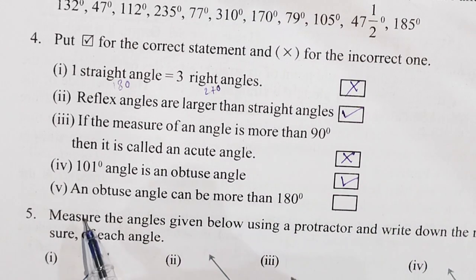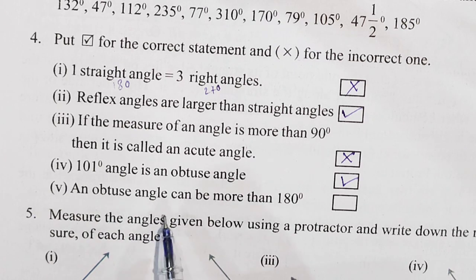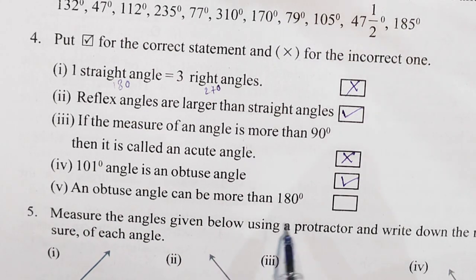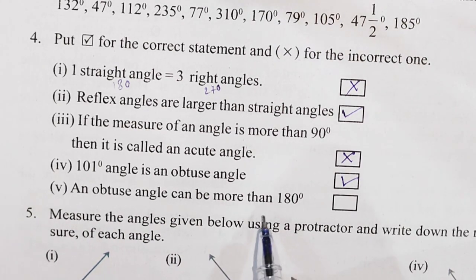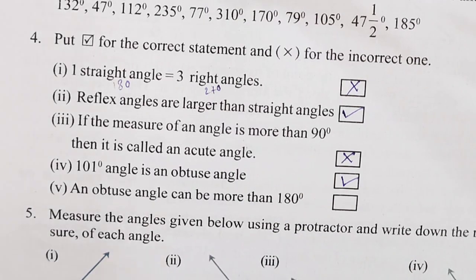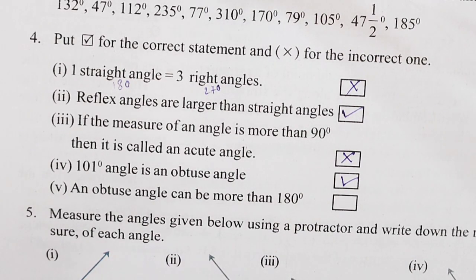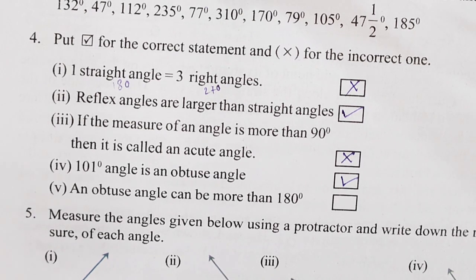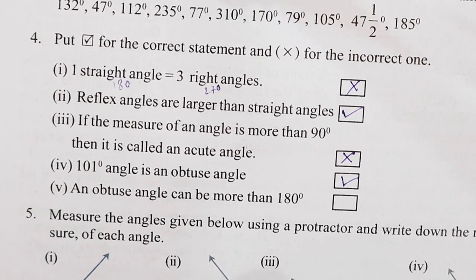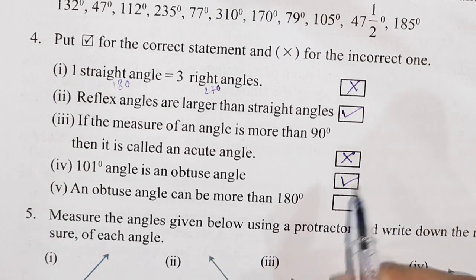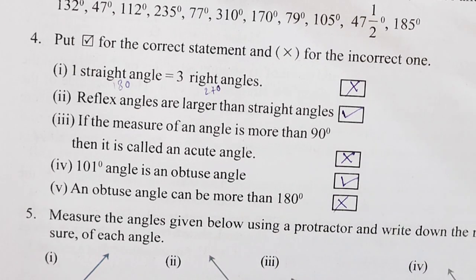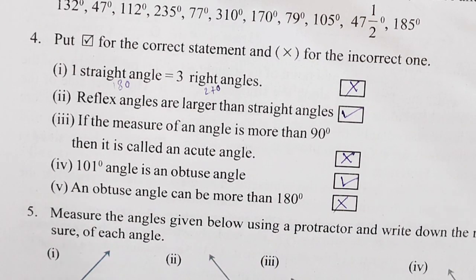Next, question number 5: An obtuse angle can be more than 180 degrees. Obtuse angle means between 90 degrees and 180 degrees, so an obtuse angle cannot be more than 180 degrees — this statement is wrong.